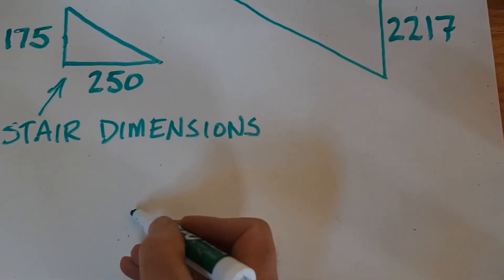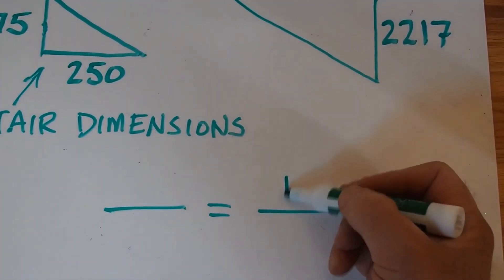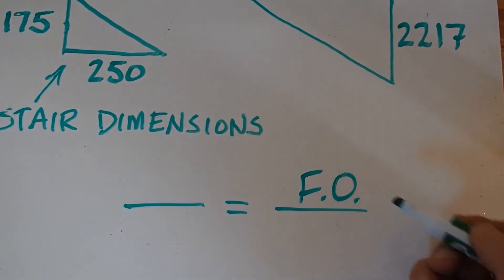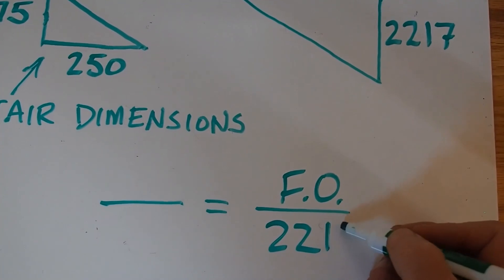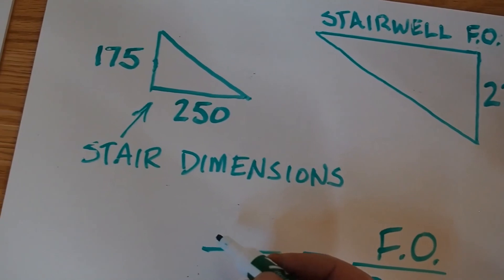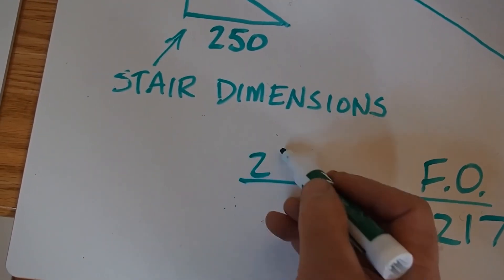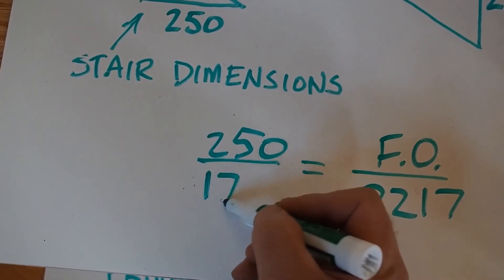So to do that, remember I draw four lines. And I'm going to put the unknown up there. I'm going to put the rise there. And then this is the run, so 250 goes on the top and 175 goes on the bottom.